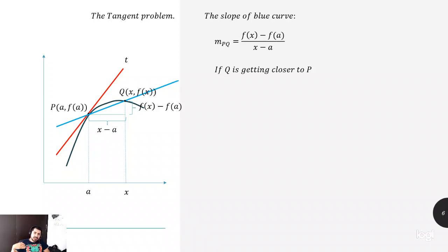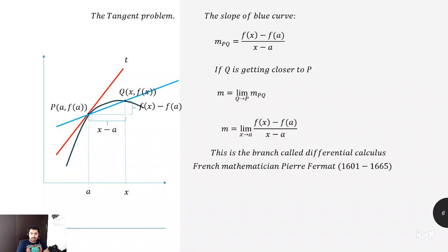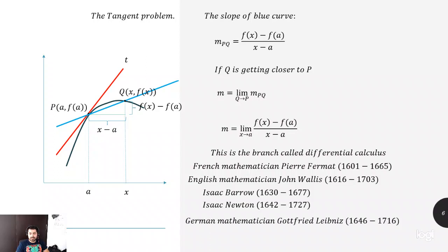Imagine that Q is getting closer and closer to P. So then we're saying that the slope is given by the limit when Q tends to be P of m_PQ. Then you can represent that the limit x to a [f(x) - f(a)] / (x - a). This is another branch of the calculus, which is the differential calculus. And we have this actually was developed 2,000 years after the area problem. And actually it was French mathematician Pierre Fermat, English mathematician John Wallis, Isaac Barrow and Isaac Newton, and then a German mathematician, Gottfried Leibniz.